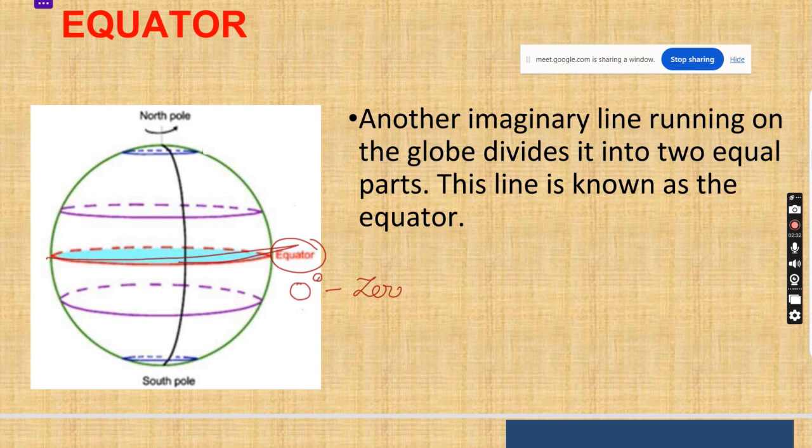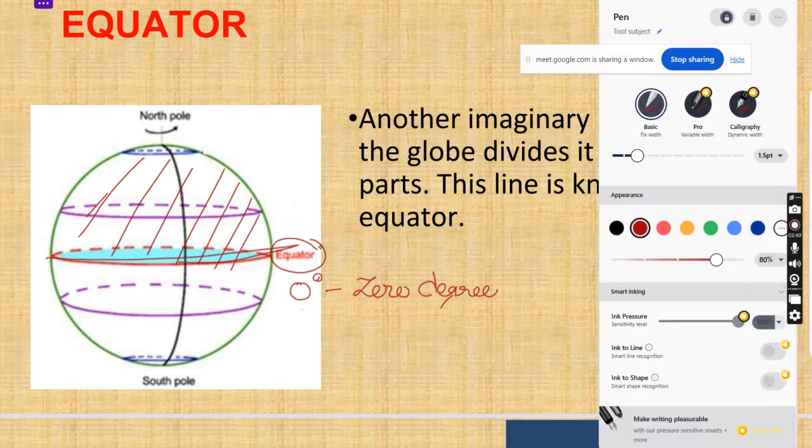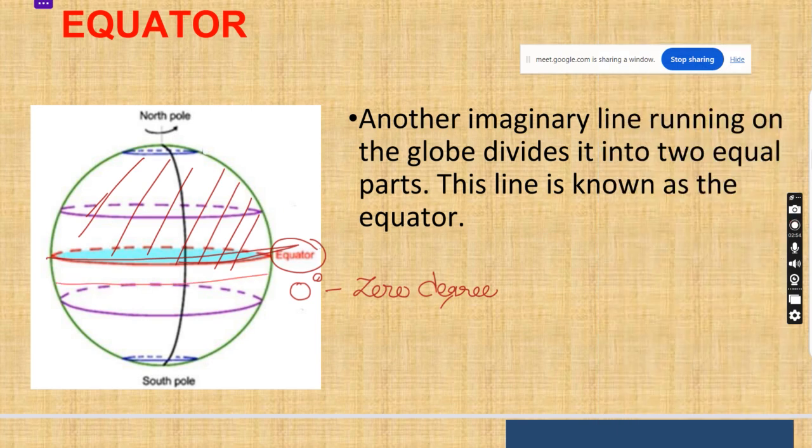This is only 0 degree, that is equator. What is equator? Equator is a middle most part which divides the earth into two equal halves. You can see this is another half, and if I am changing my pen color then it will be helpful for you to understand, and this is another part.